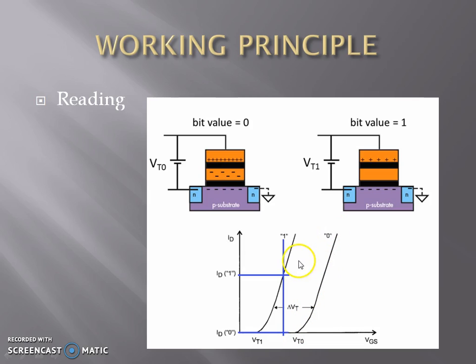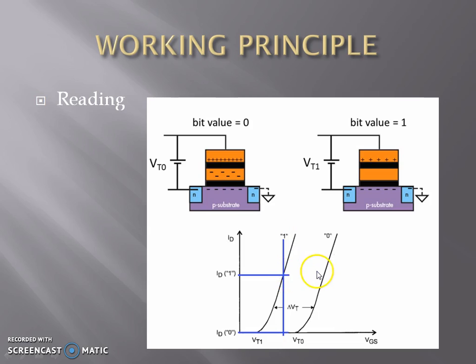To read the value, we give an intermediate voltage in between these two threshold voltages and read the value of current at that voltage. If we get a positive current, the read value is 1. If we get a zero current, then the read value is 0.